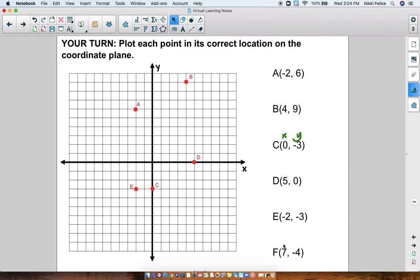And point F is at positive 7, negative 4. So again, I go back to the origin. I go to the right 7 for positive 7, and then I go down 4 for negative 4. 1, 2, 3, 4. Here we go. And there's point F.